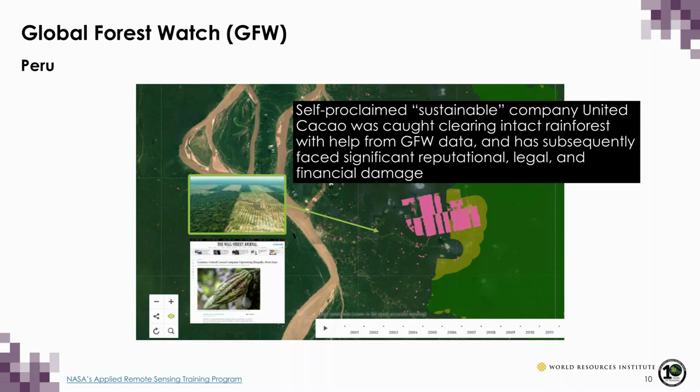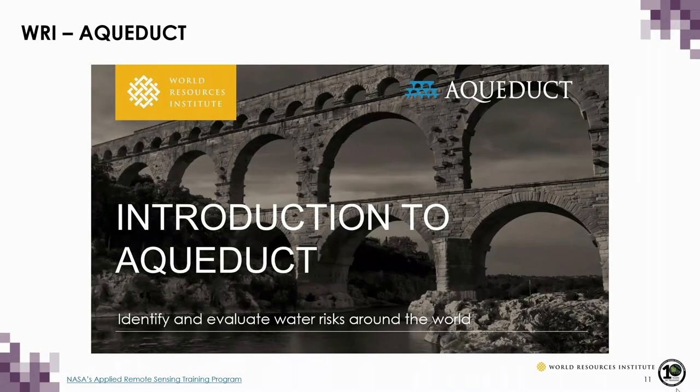The tools we're going to be talking about today are Aqueduct and Resource Watch. First up is Aqueduct. Hello, my name is Samantha Kuzma. I am a GIS Research Associate with the Water Team at WRI, and I'll be walking you through a demonstration of Aqueduct. Aqueduct is a suite of tools that can be used to identify and evaluate water risks around the world.